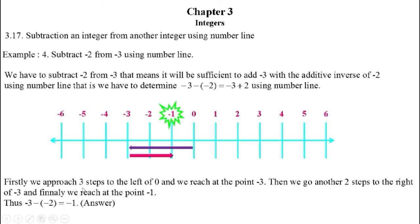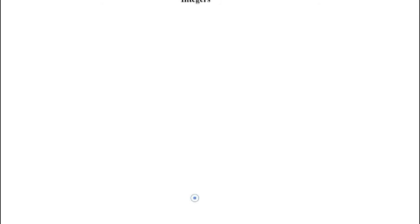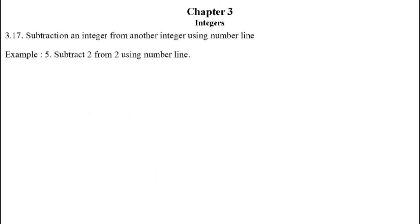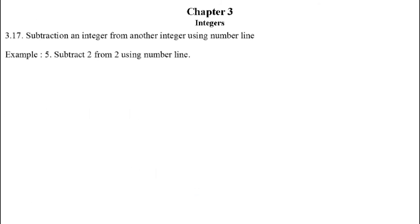Description: firstly we approach three steps to the left of 0 and reach at the point minus 3. Then we go another two steps to the right of minus 3 and finally we reach at the point minus 1. Thus, minus 3 minus (minus 2) equals minus 1.